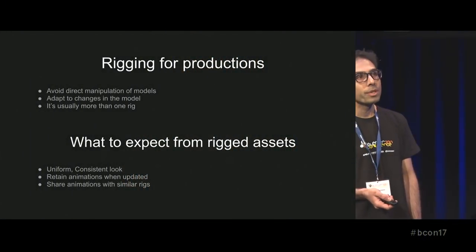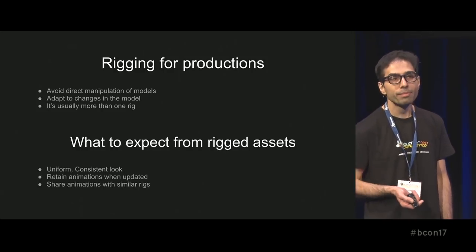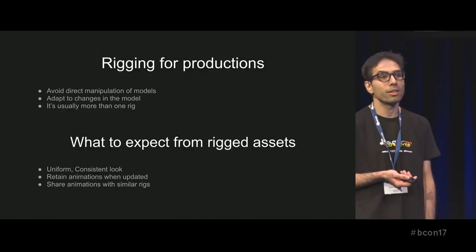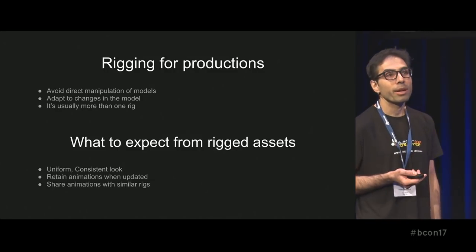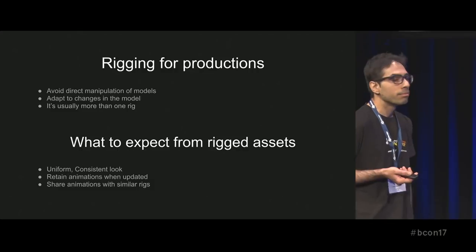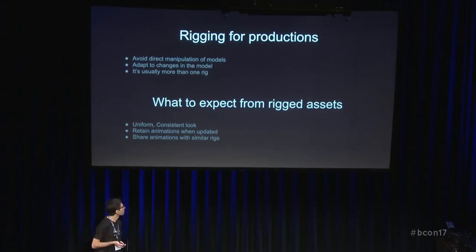You want to be able to change the model during production. Usually you have more than just one rig, because you have many characters, props, a lot of stuff going on in a film. What you have to expect from a rig, especially in one production, is consistency — you only want to learn how to use it once. You want to keep your animations when you update your rig, and share animations between similar characters or props.